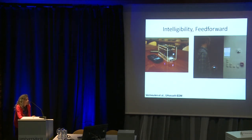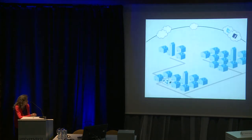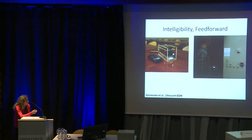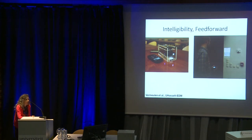A step further in intelligibility research is the feed-forward torch. Nowadays projectors are small enough to be built in or mounted on top of a smartphone. Here you see a research setup where a small projector is mounted on top of a smartphone, used similarly to a torch. For instance, in our research center we have all kinds of buttons on the wall and it's not always clear what they are meant for. With this kind of system, you can get additional information before you actually perform the action.